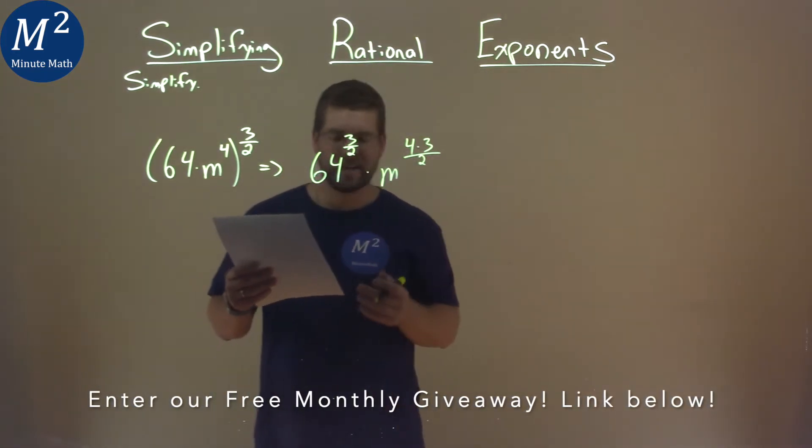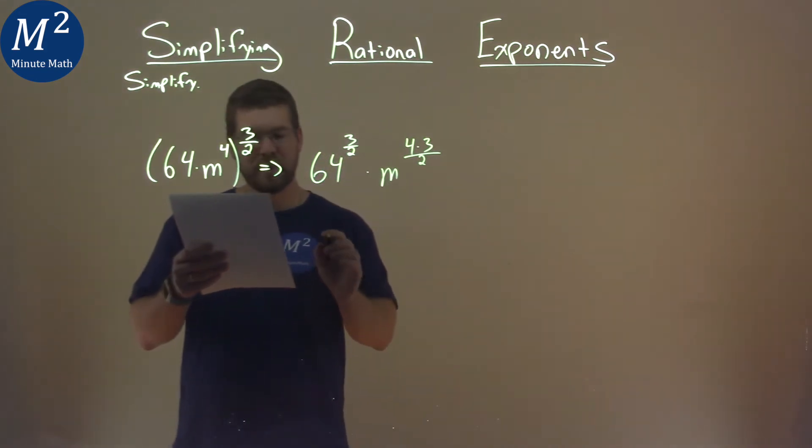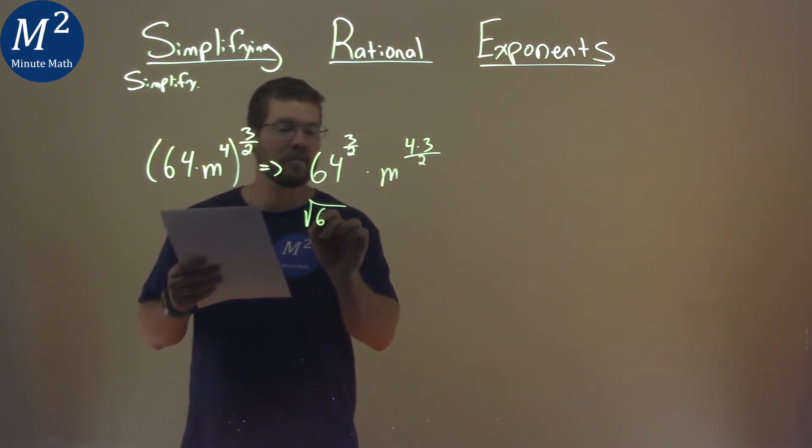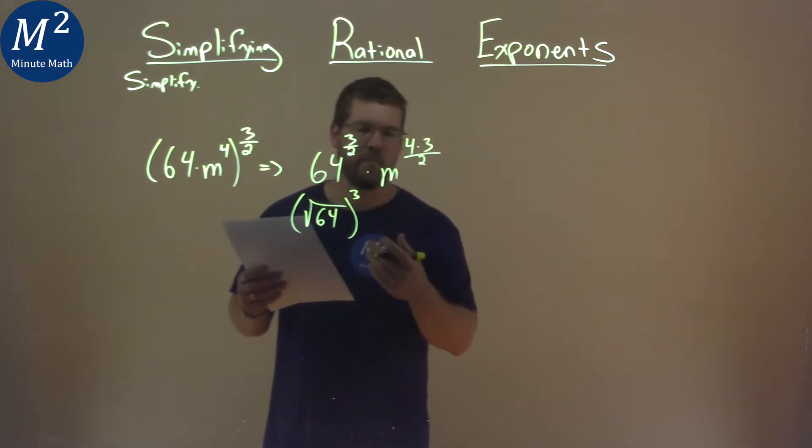Then, from there, we're still going to keep simplifying. 64 to the three-halves power is the same thing as the square root of 64, all to the third power. Remember, the square root is equal to the one-half power.